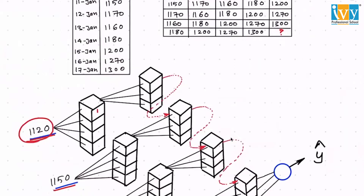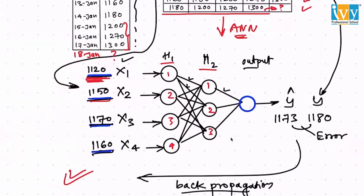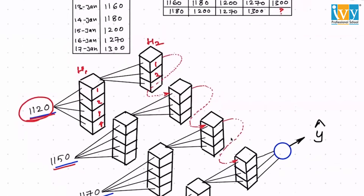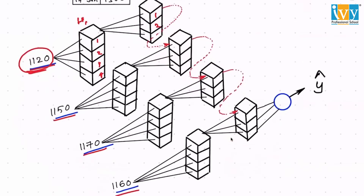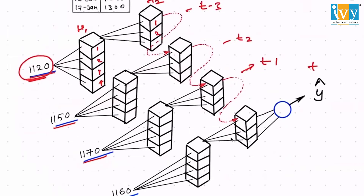Here you can see hidden layer number one and hidden layer number two — the same architecture with the same structure. I've purposefully built these cubes so you can visualize backpropagation through time. In LSTMs or RNNs, data is processed one time step at a time — this is at time t, this is at t-1, t-2, t-3 — and how values at previous time steps affect other time steps is learned more effectively.